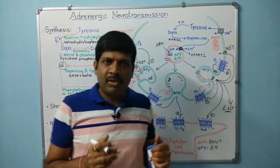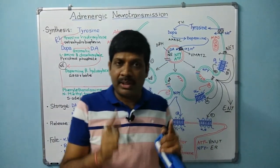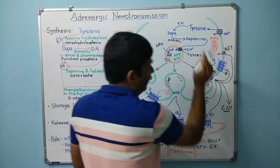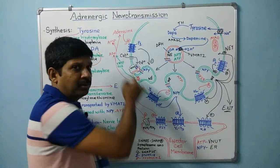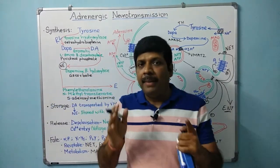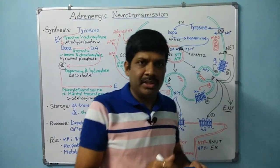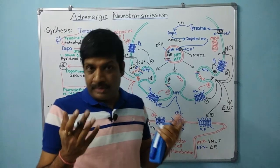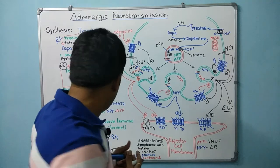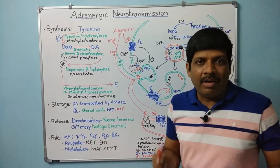Regarding metabolism: norepinephrine, dopamine, and catecholamines are metabolized by monoamine oxidase (MAO) and catechol-O-methyltransferase (COMT). MAO is responsible for metabolizing norepinephrine when it is in the cytosol or nerve terminal, whereas COMT metabolizes catecholamines that are endogenically released or administered.